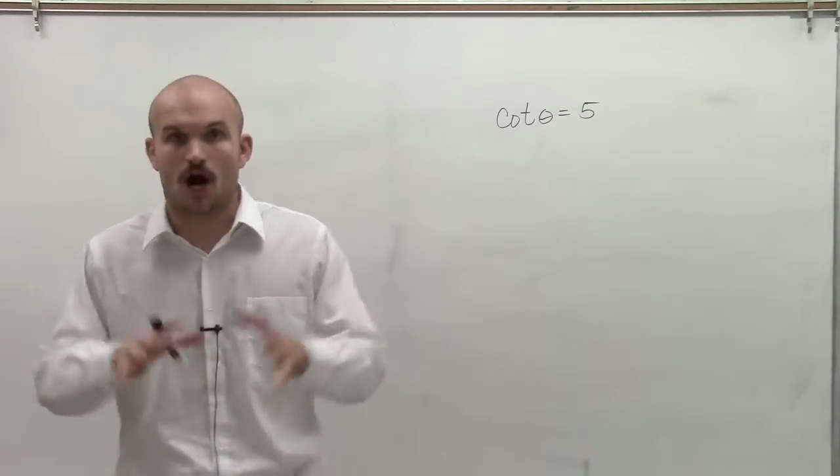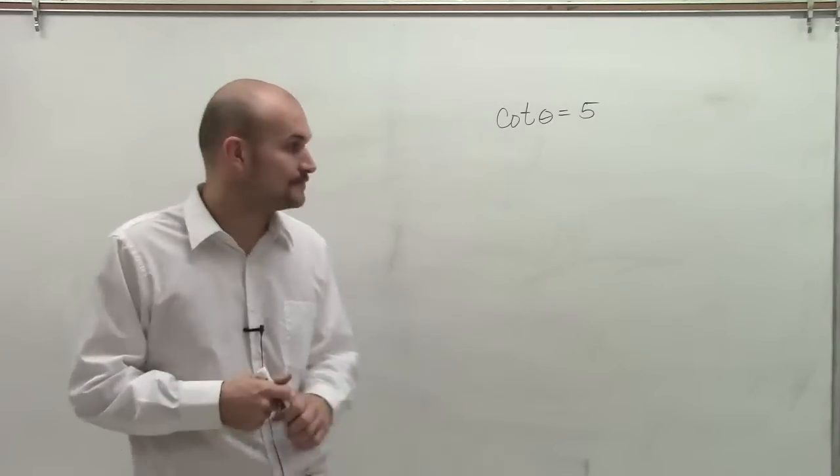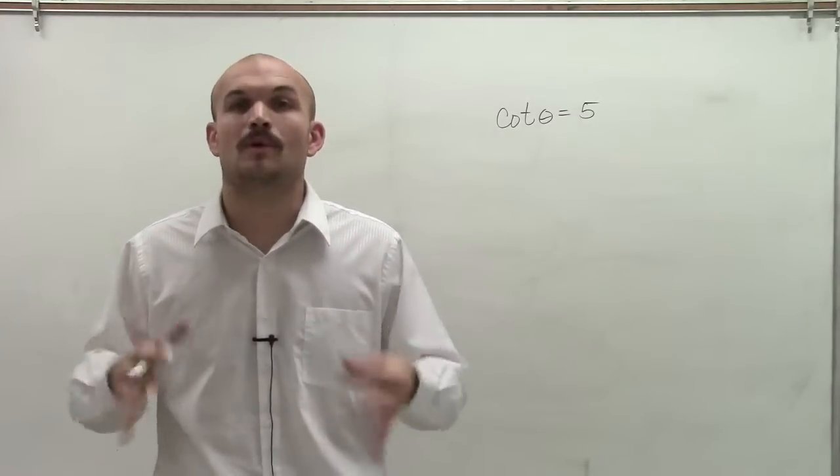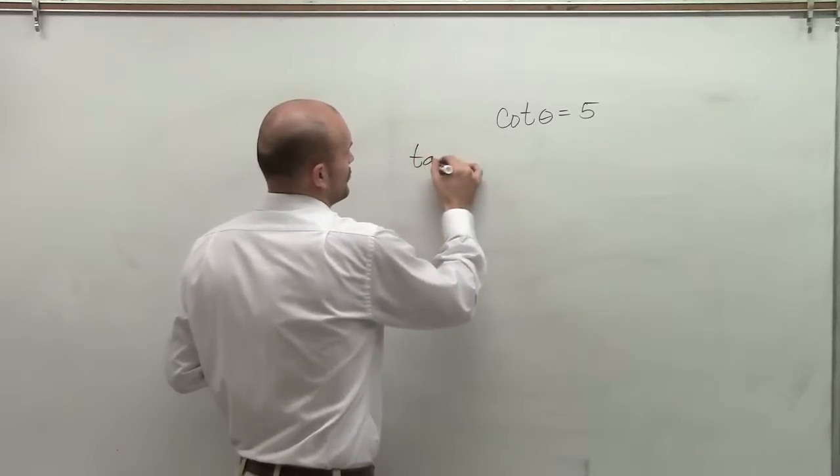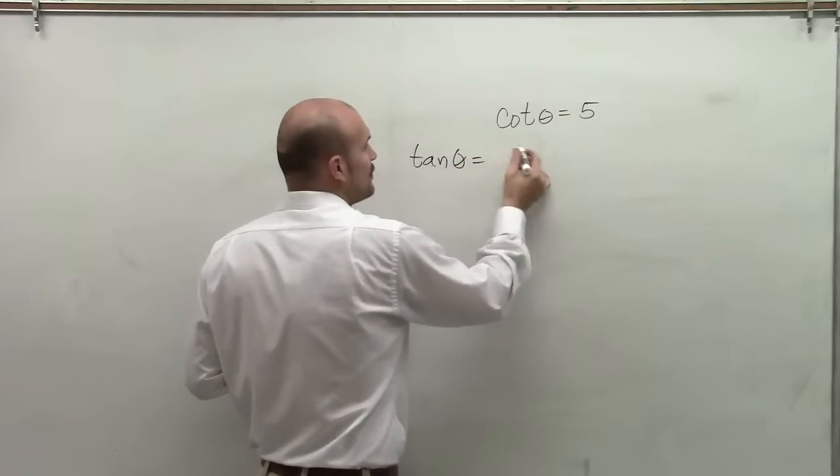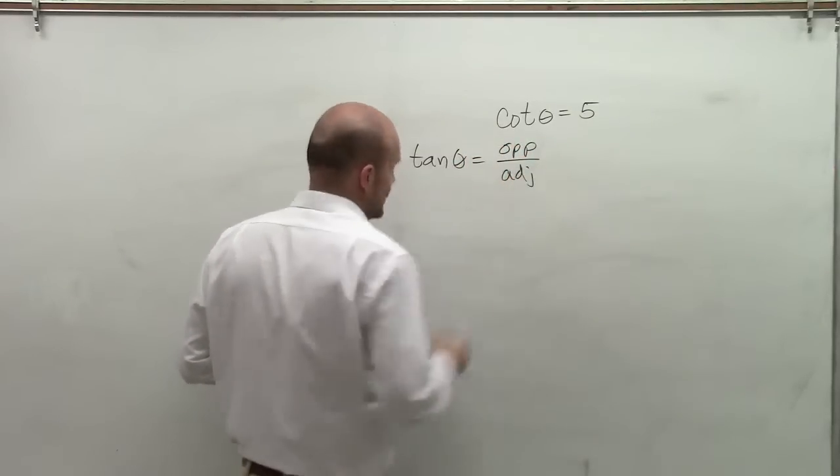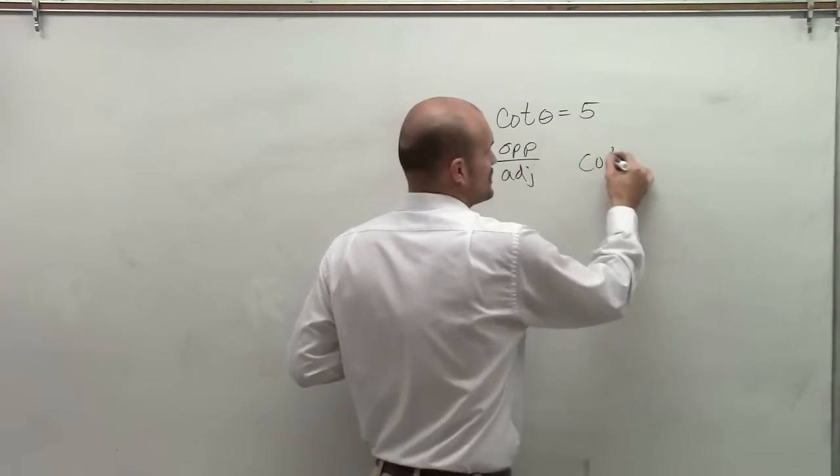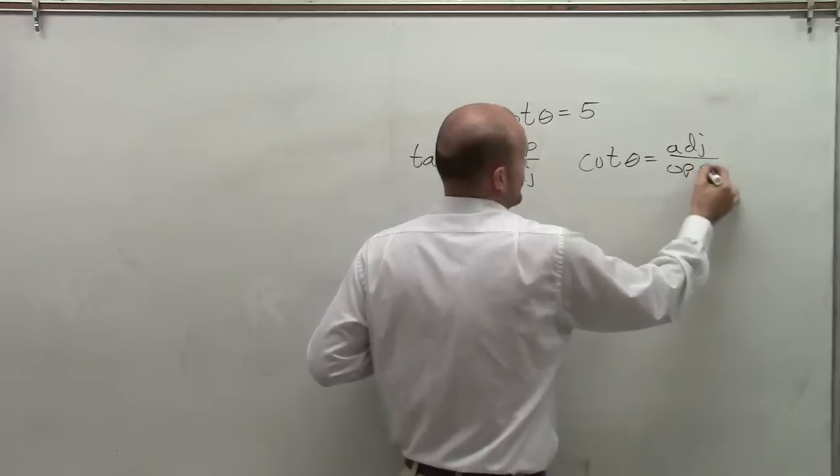When I see cotangent, I automatically think of cotangent as the reciprocal of tangent. And one thing when dealing with trying to figure out our angles, we've got to remember what does our tangent represent. Tangent of any angle represents the opposite divided by the adjacent. So therefore, the cotangent function, being the reciprocal of that, is going to be the adjacent side over the opposite side.